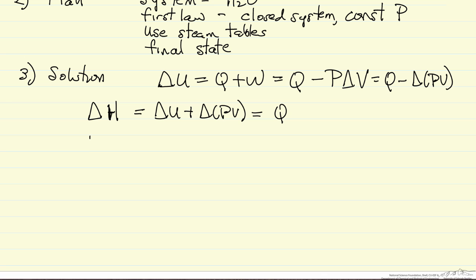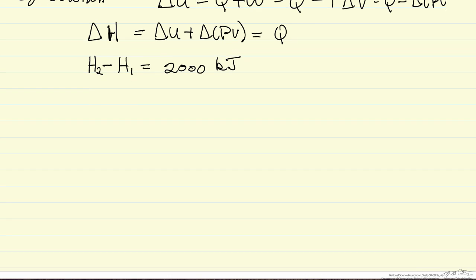And I know the value of Q. So delta H is the final enthalpy per kilogram minus the initial enthalpy, and that's going to be equal to Q, which is 2000 kilojoules as given in the problem statement, that's the amount of heat added.